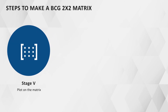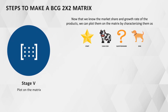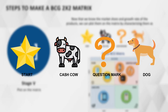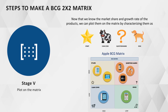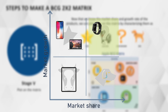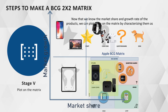Stage 5: Plot on the matrix. Now that we know the market share and growth rate of the products, we can plot them on the matrix by characterizing them as stars, question marks, dogs, or cash cows. Our star products are iPhones and MacBooks, the cash cow is iPad, question marks are iWatch and AirPods, and dogs are Apple TV and iPod.